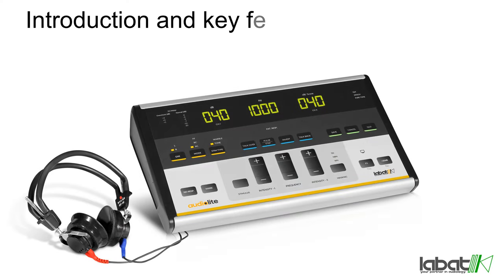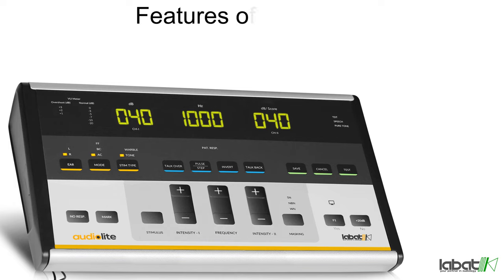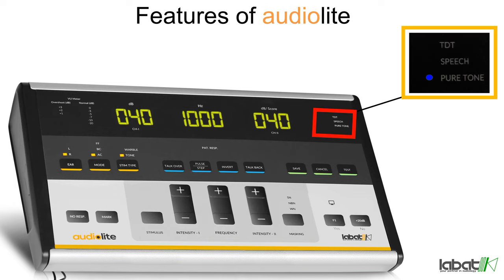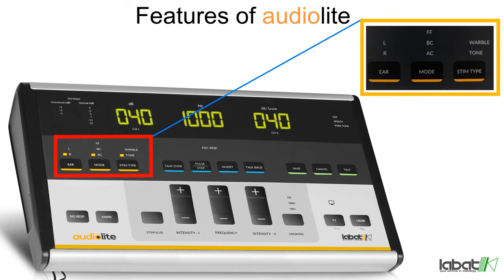Introduction and key features of AudioLite: Pure Tone Test, Speech Test, and Tone Decay Test. Ear is used to select the ear — left ear or right ear. Mode is used to select air conduction, bone conduction, and free field.